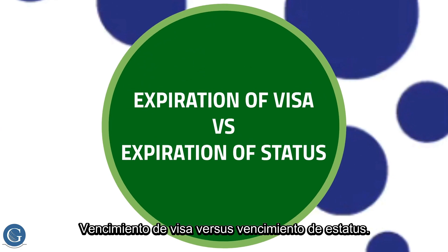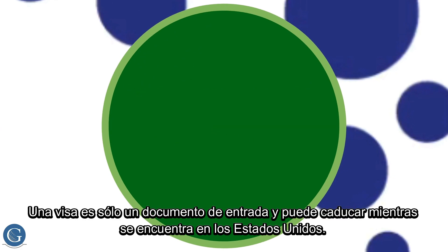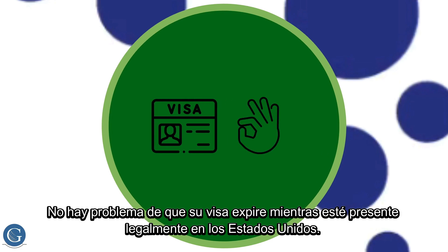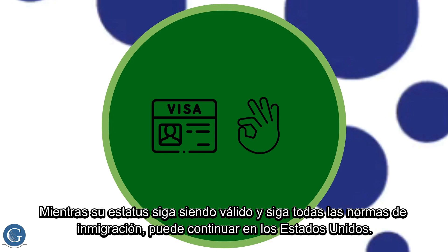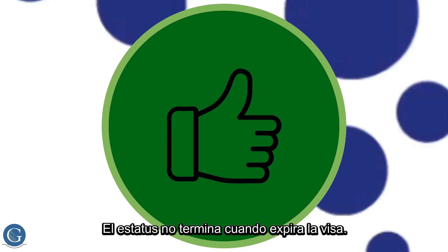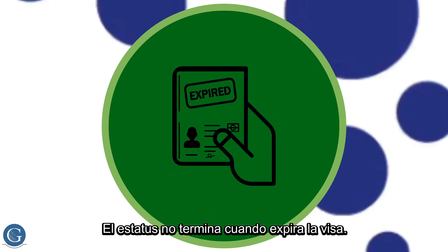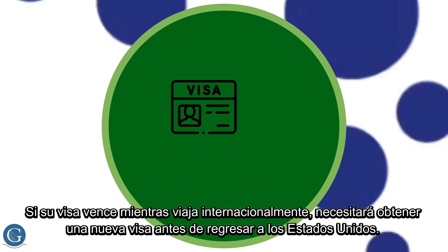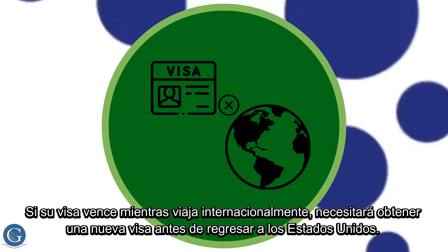Expiration of Visa vs. Expiration of Status. A visa is only an entry document and can expire while you are in the US. There is no issue if your visa expires while you are legally present in the US. As long as your status is still valid and you continue to follow all immigration regulations, you can continue to remain in the US. The status does not end when the visa expires. However, you will require a valid visa anytime you seek entry into the US. If your visa expires and you are traveling internationally, you will need to get a new visa before returning to the US.